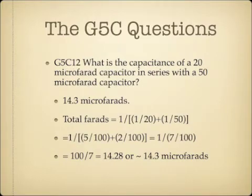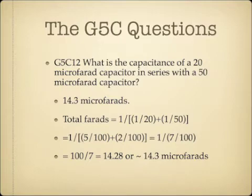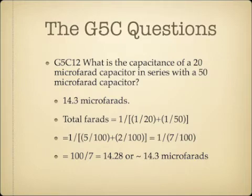What is the capacitance of a 20 microfarad capacitor in series with a 50 microfarad capacitor? The answer is 14.3 microfarads, because capacitance in series is calculated the same way as resistance in parallel. Total microfarads equals 1 over the sum of 1/20 plus 1/50. Finding the lowest common denominator gives 1 over the sum of 5/100 plus 2/100, which is 1 over 7/100. That equals 100 over 7, which is 14.28, or roughly 14.3 microfarads.